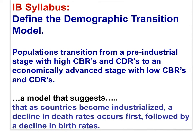It's a model that suggests that as countries become industrialized, a decline in death rates occurs first, followed by a decline in birth rates. Look for the explanatory factors in the change in both birth rates and death rates through the course of demographic transition, and keep an eye on natural increase rate.